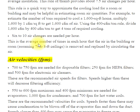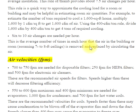6 to 10 air changes are needed per hour. This is the average number of times each hour that the air in the building or room, assuming 7 to 8-foot ceilings, is removed and replaced by circulating the air.